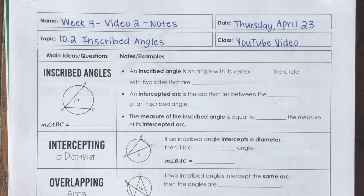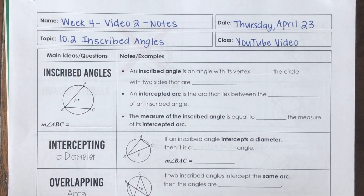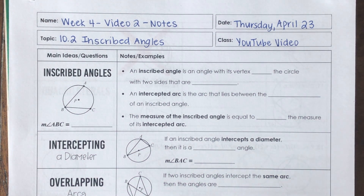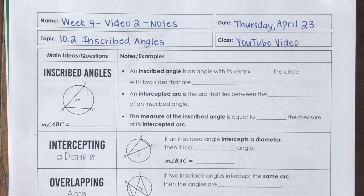Okay, so today it's our second video for week four. Today we're going to be talking about section 10.2, which is inscribed angles inside of a circle. We already took our notes this week on major and minor arcs, and now we're going to be talking about some inscribed angles inside of a circle. So to get us started, we're going to start off with the definition.